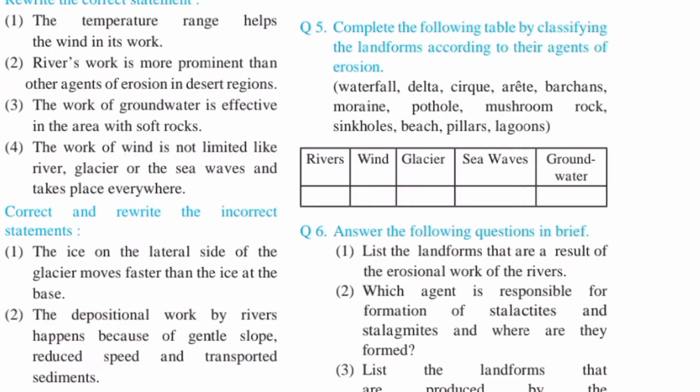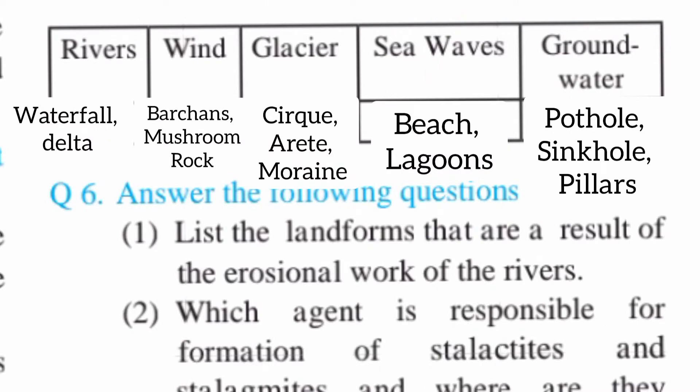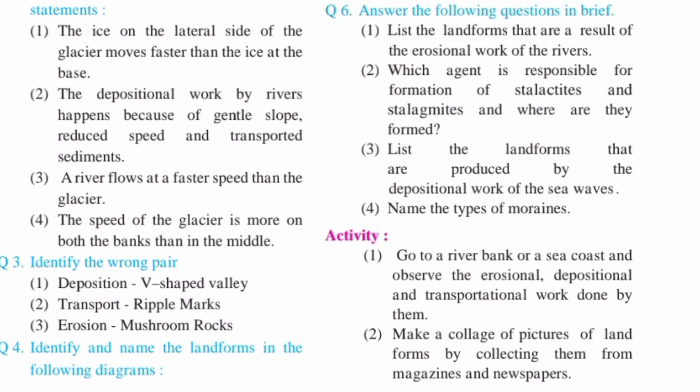Question number 5: complete the following table by classifying the landforms according to their agents of erosion. Question number 6: answer the following questions in brief. First: list the landforms that are a result of the erosional work of rivers.